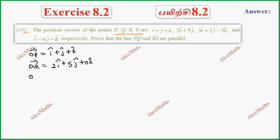Then, OR vector is 3I plus 2J minus 3K. And OS vector is I minus 6J minus K.